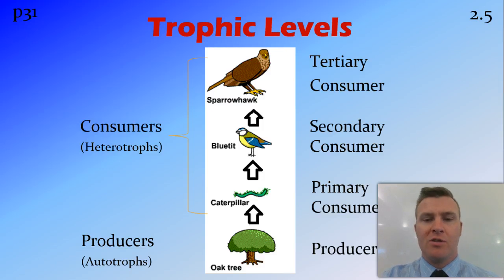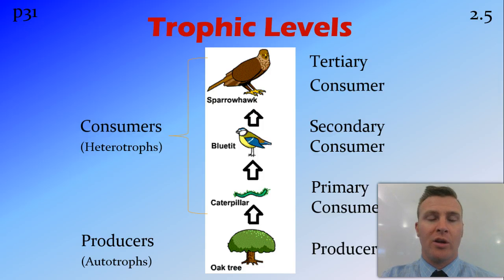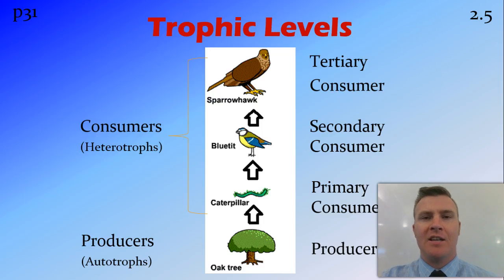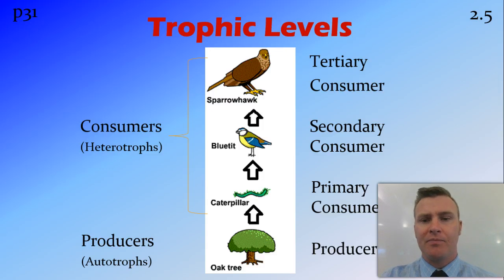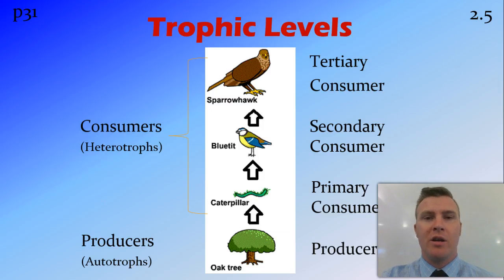The first order consumers are eaten by secondary consumers, or second order consumers, which are eaten by tertiary consumers, or third order consumers. All consumers are considered heterotrophs, meaning they have to get their food elsewhere for energy. In some ecosystems there is another level — the quaternary consumer, or fourth order consumer.